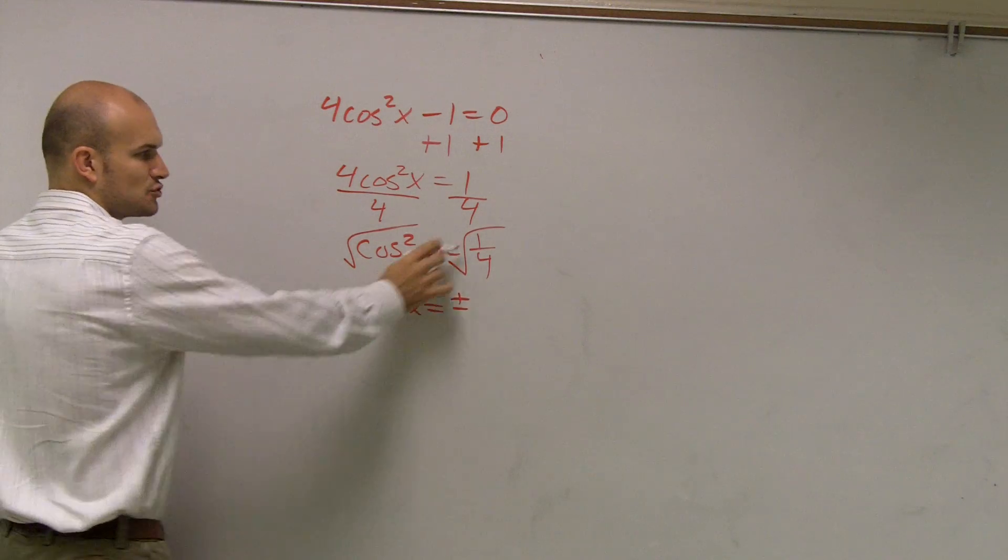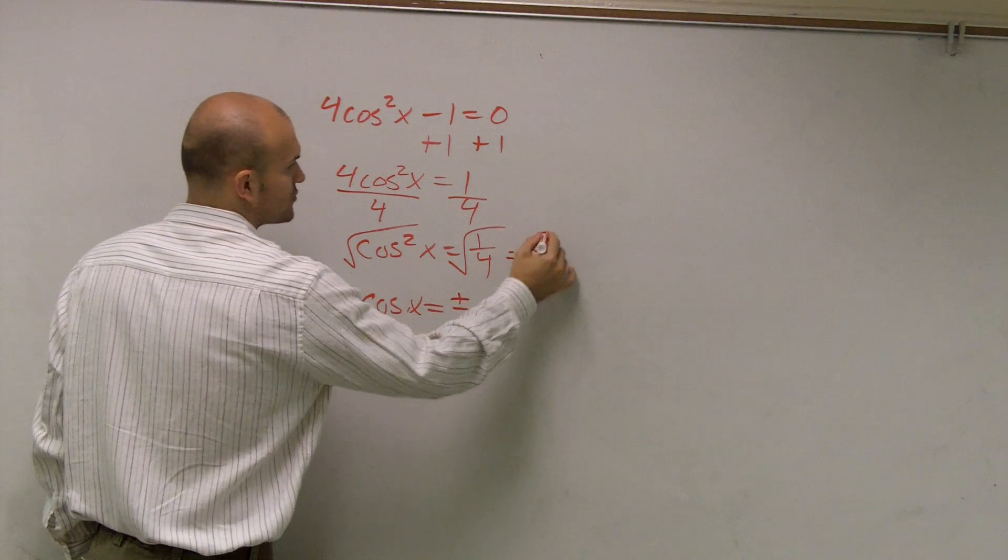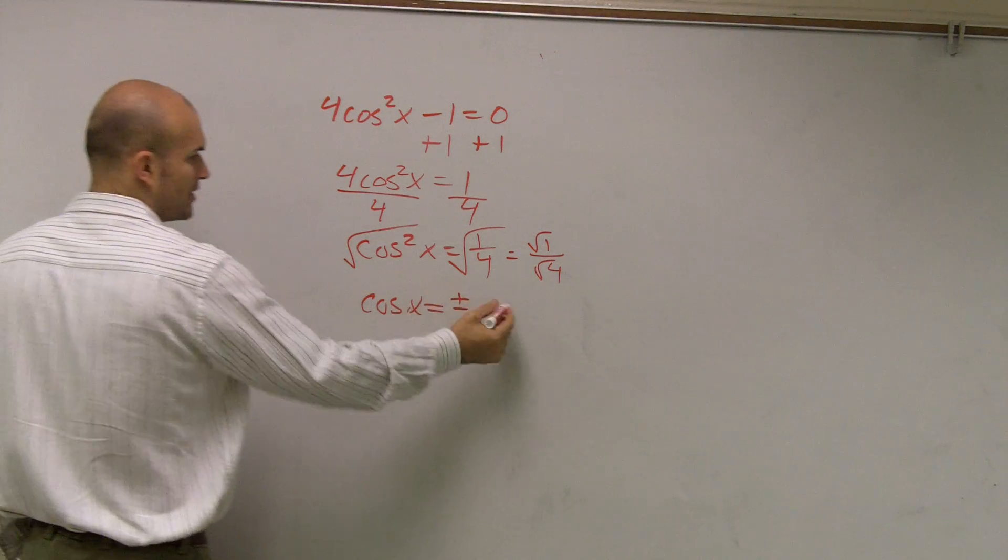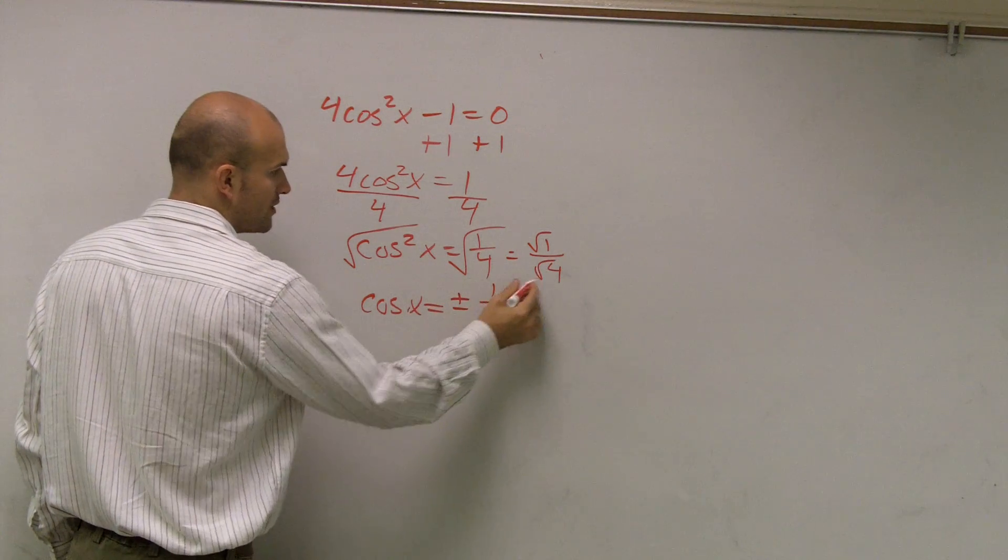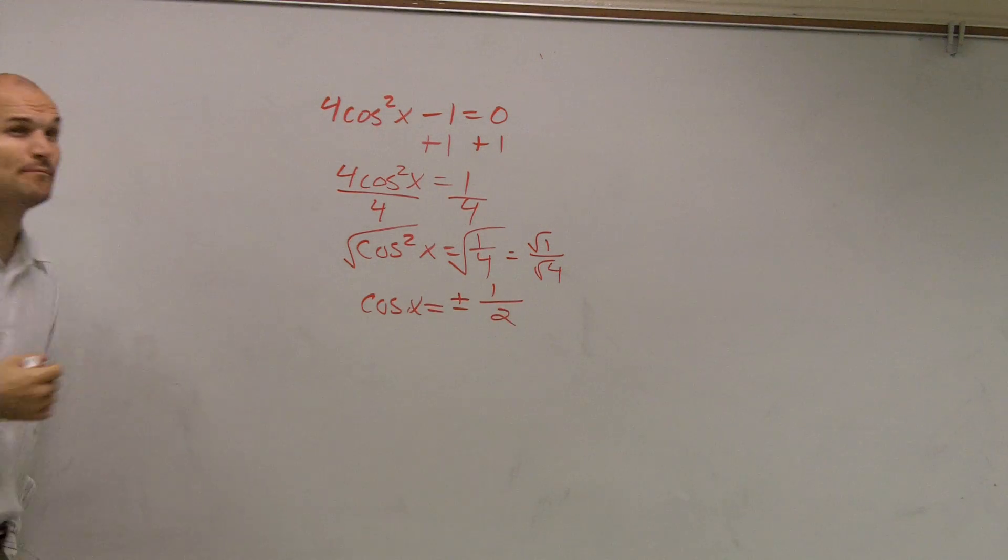So I have plus or minus the square root of 1. This equals the square root of 1 over the square root of 4. The square root of 1 is 1, the square root of 4 is 2. So I have plus or minus 1/2.